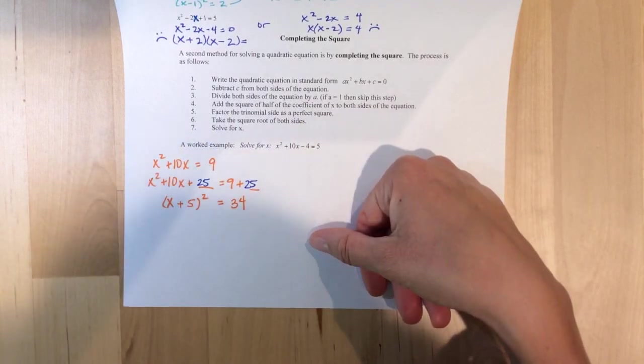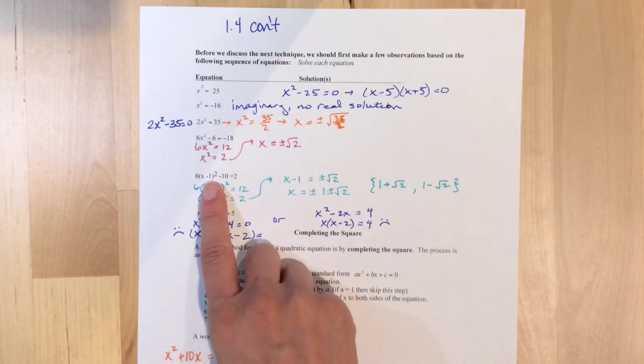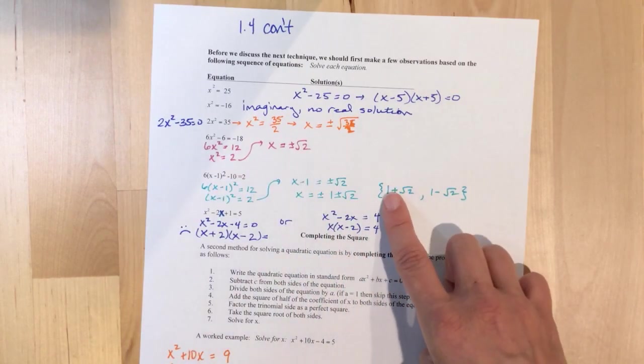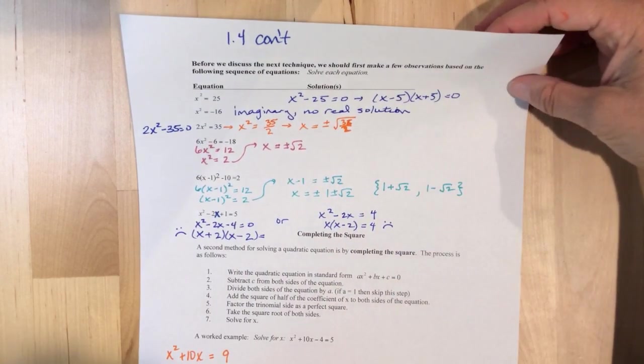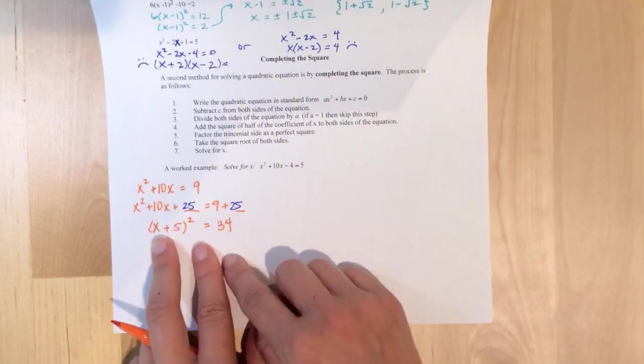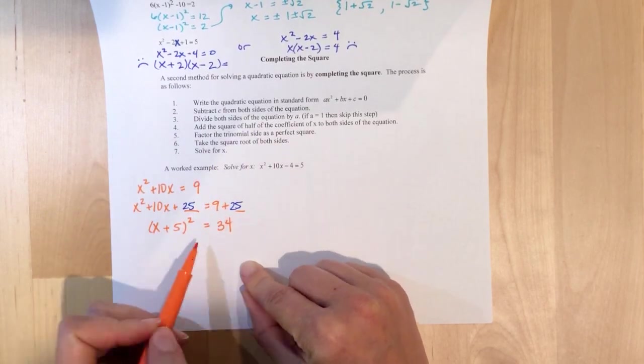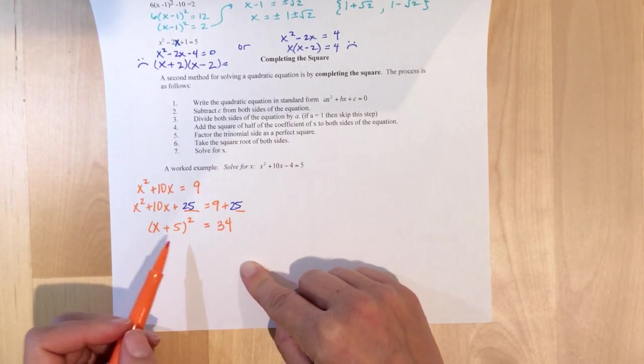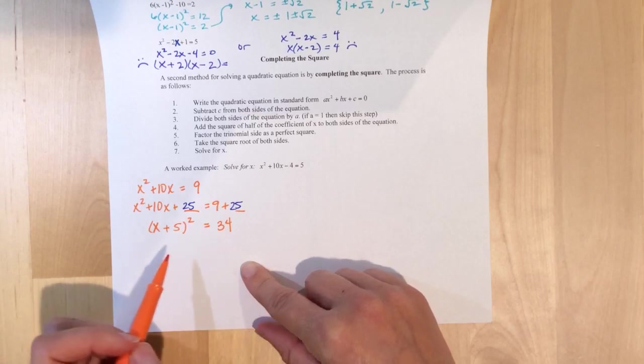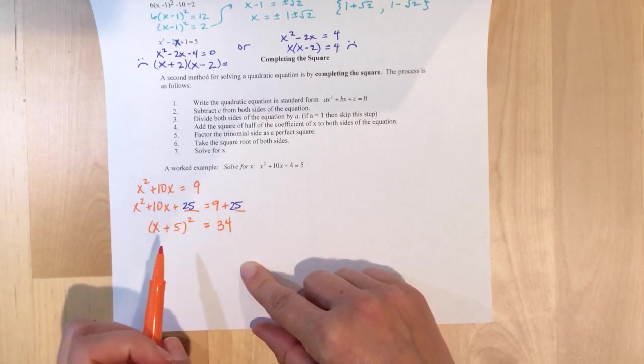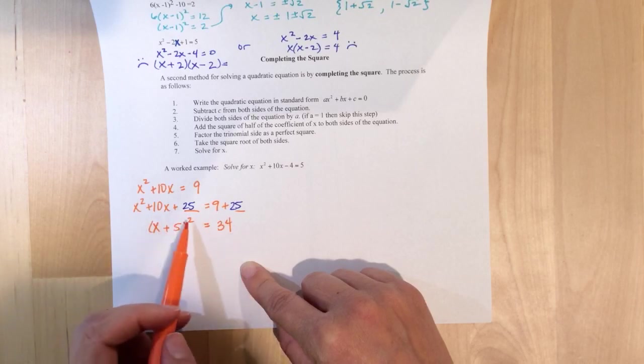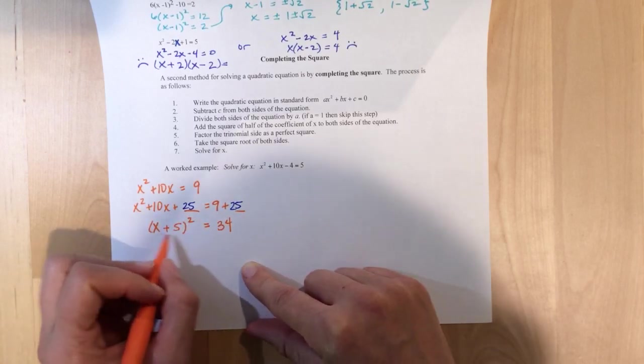So, now, notice how this is very similar to the example above. That let us get down to 1 plus root 2, 1 minus square root 2. So, all we're going to, well, actually, pause. This is completing the square. That's it. This, yeah, you did it.